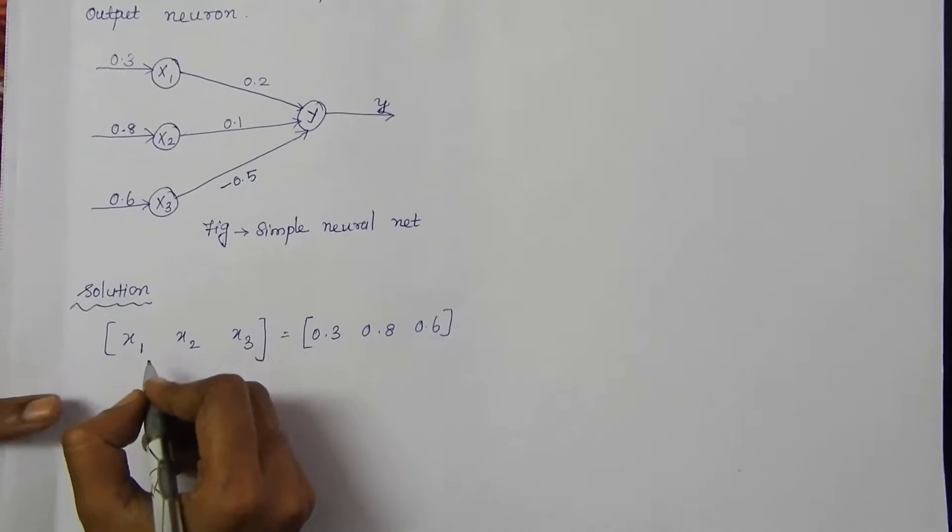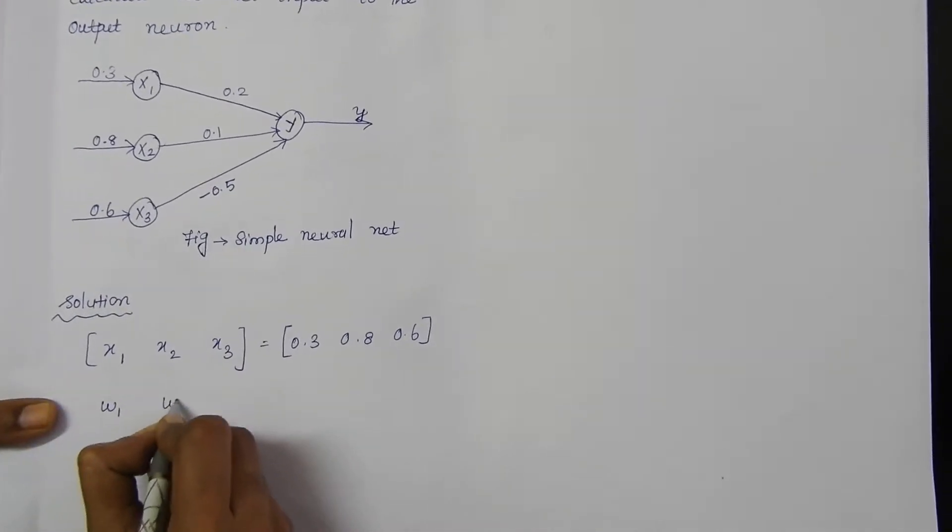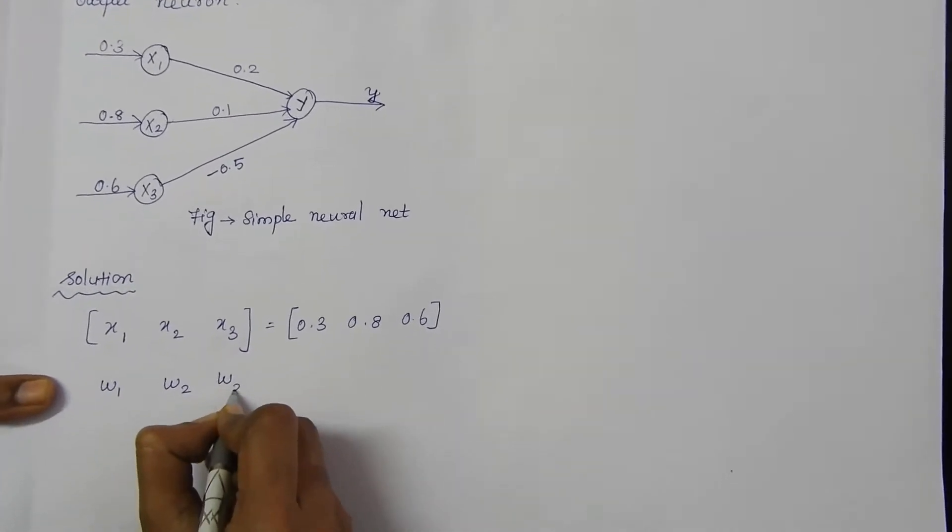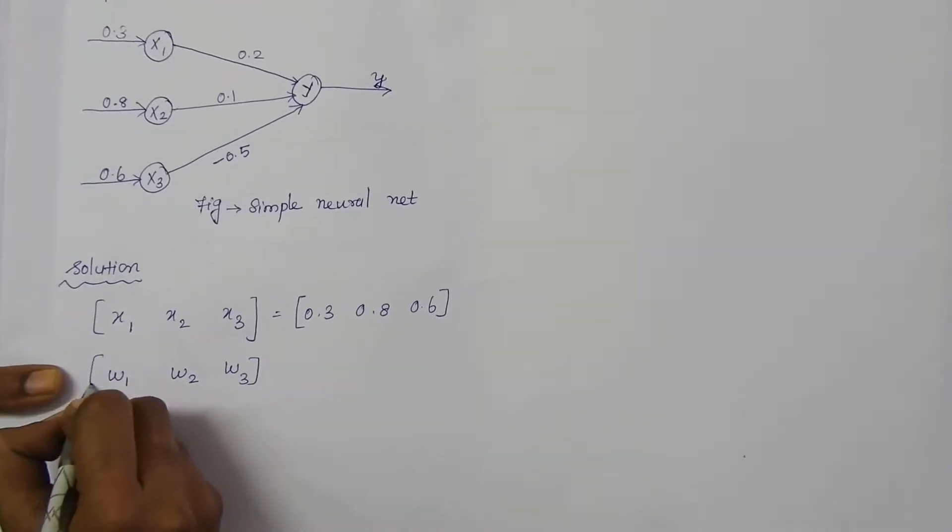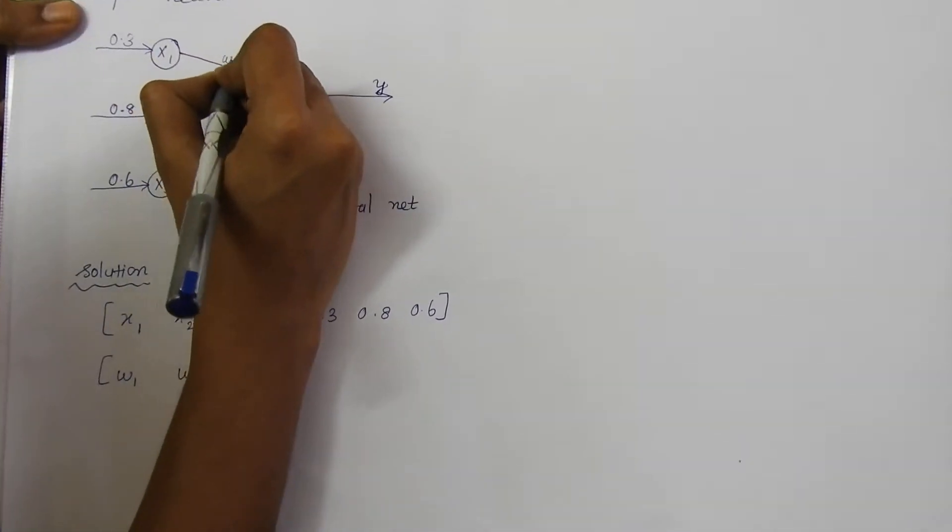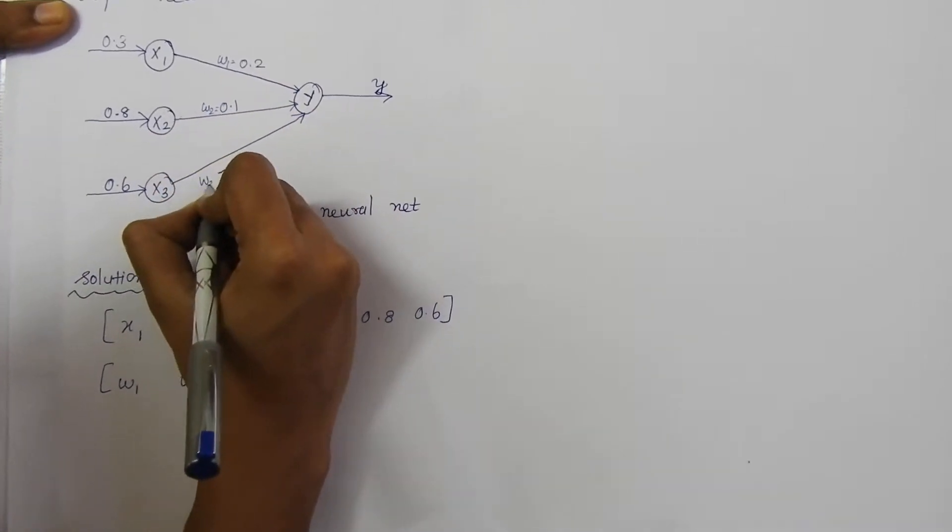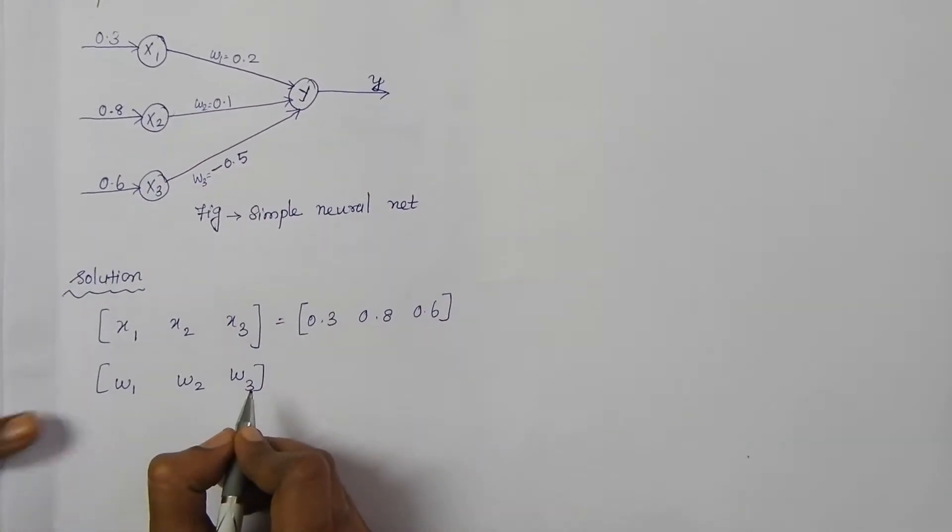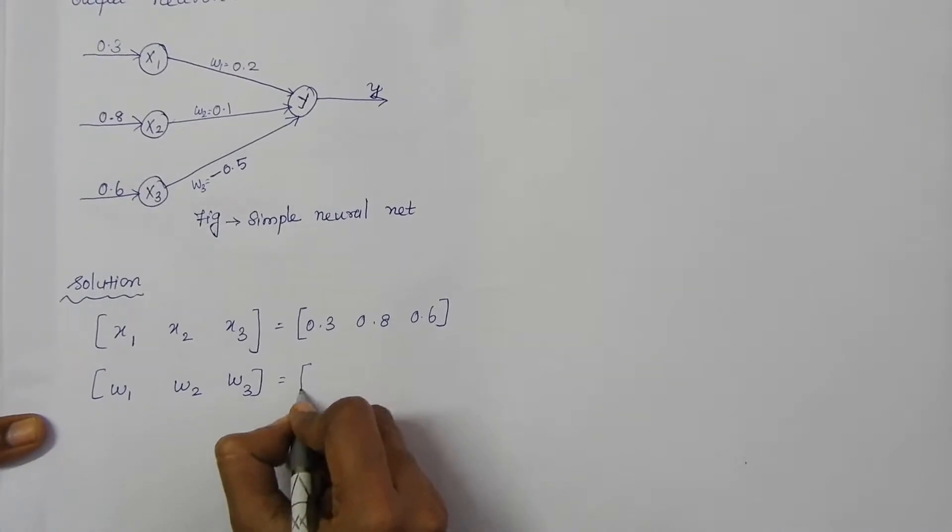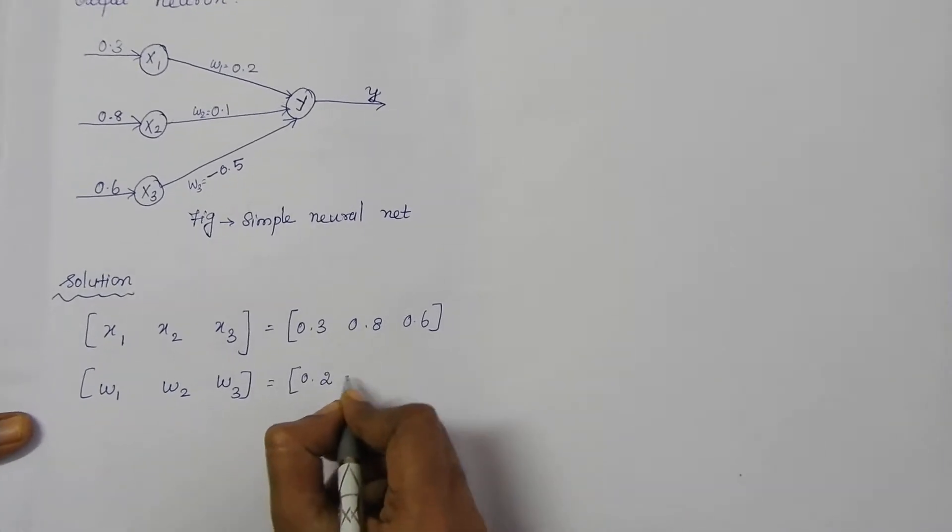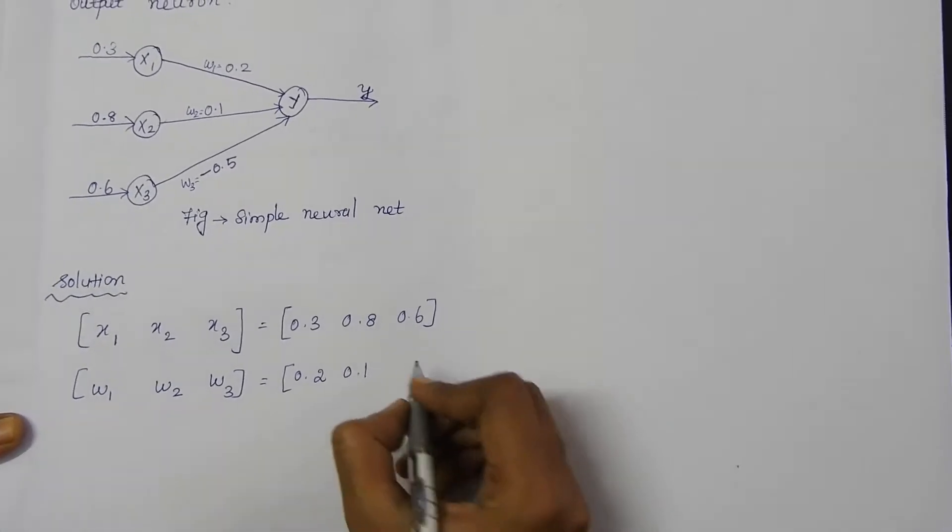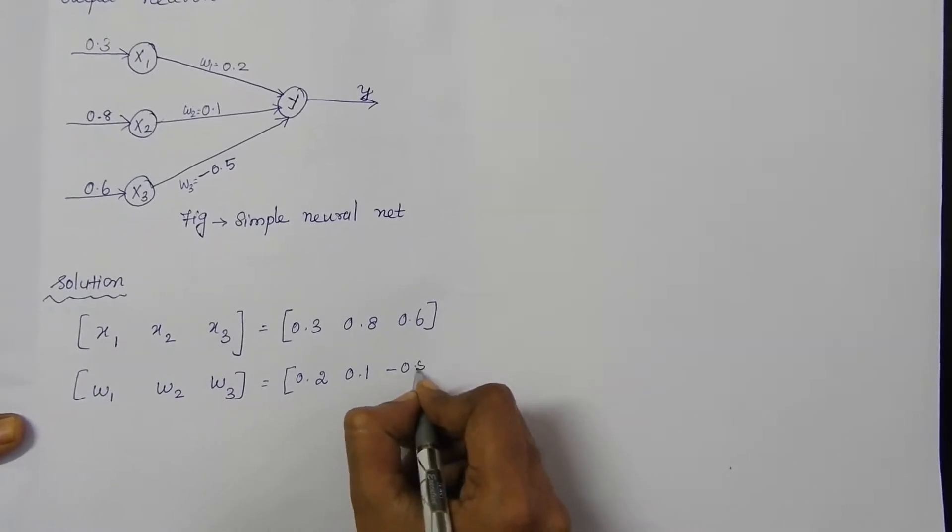The weights are W1, W2, and W3. This is the W1 weight, this is W2, and this is W3. The values are 0.2, 0.1, and minus 0.5 respectively.